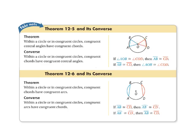Theorem 12-6 states that within a circle or in congruent circles, congruent chords have congruent arcs. So, if segment AB is congruent to segment CD, then arc AB is congruent to arc CD. Its converse states that within a circle or in congruent circles, congruent arcs have congruent chords. So, if we know that arc AB is congruent to arc CD, then we know that segment AB is congruent to segment CD.